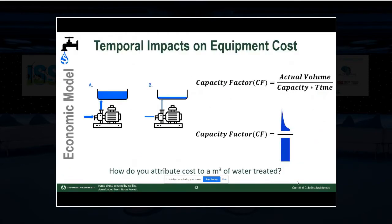All that data goes into an economic model. I want to focus on the impact of capacity factor. When attributing a treatment cost per cubic meter of water, you have a one-time capital equipment expense. Pump A moves a lot more water over its lifetime, so you can distribute that capital cost over a larger volume, making it cheaper per cubic meter. That's what we use capacity factor for in techno-economic analysis — the higher the capacity factor, the more water you can treat during the unit's lifetime and the cheaper the treatment cost.